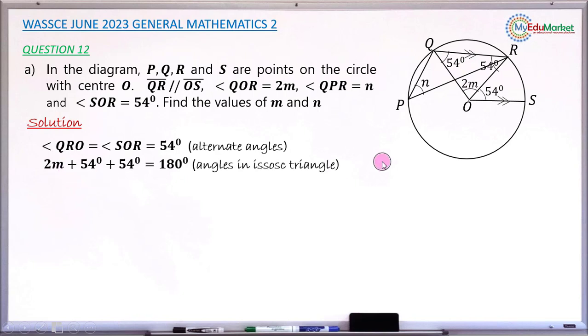So I have 2M, this angle, plus 54, plus 54, to get 180. It is angles in an isosceles triangle. So shifting 54, 54 to the right-hand side, you now have 2M equals to 180 minus 54 minus 54. Subtracting this 254 from 180 correctly, you get 72. I divide both sides by 2 to get this M. That will give you M as 36 degrees. So the size of this M, or the value of this M, is now 36 degrees.